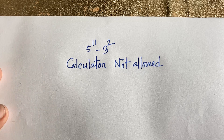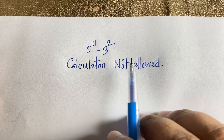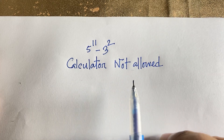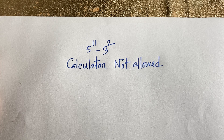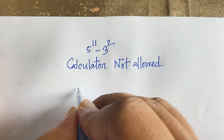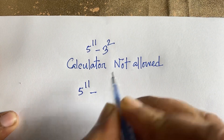Hello everyone. In this video we have solved this interesting math question: 5 to the power 11 minus 3 to the power 2 is equal to what. How to solve this question without a calculator? So let's start. Here is 5 to the power 11 minus 3 to the power 2.